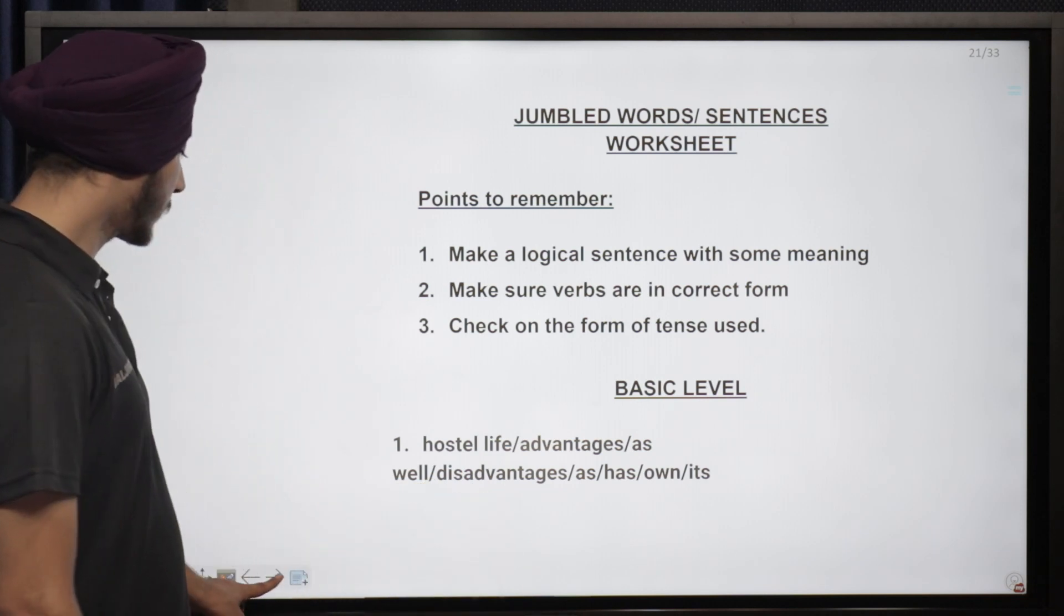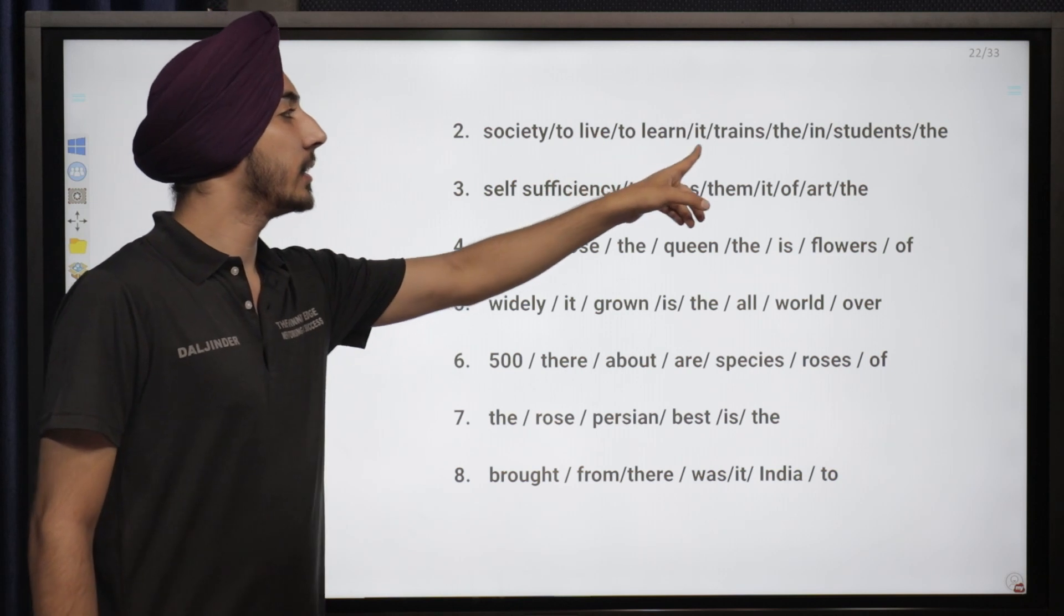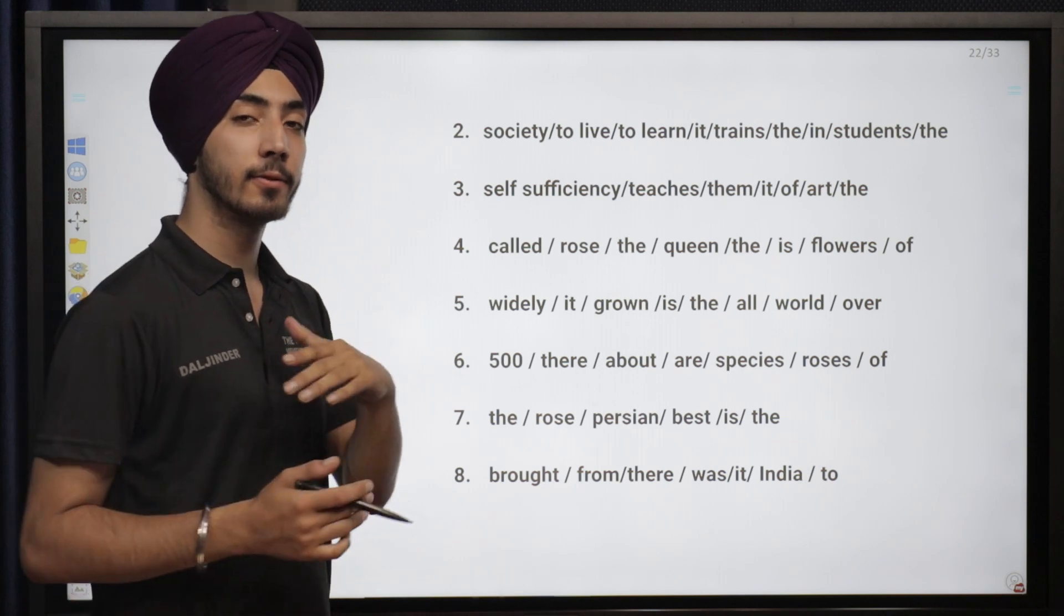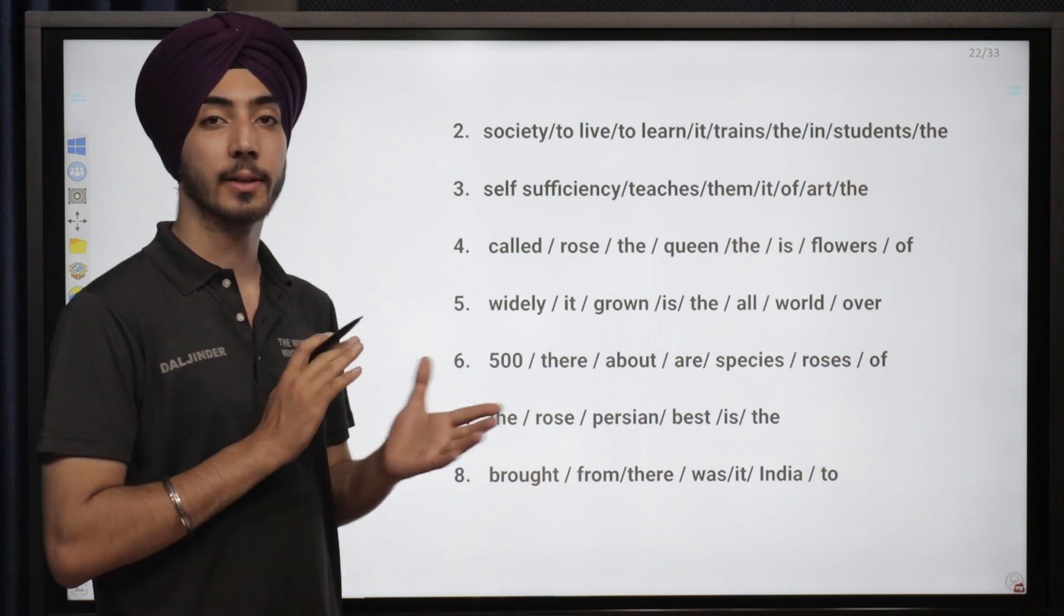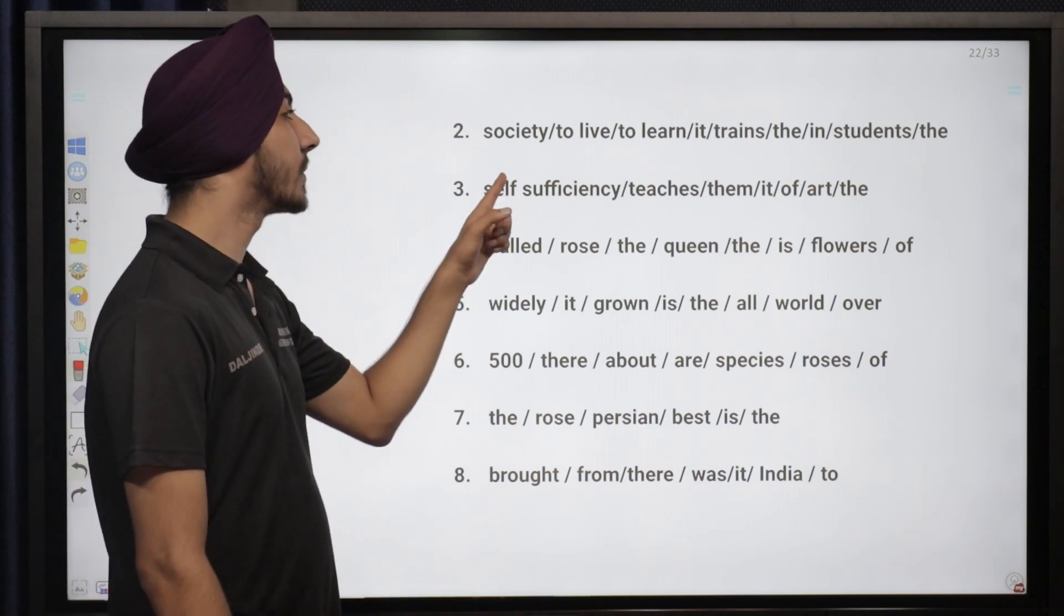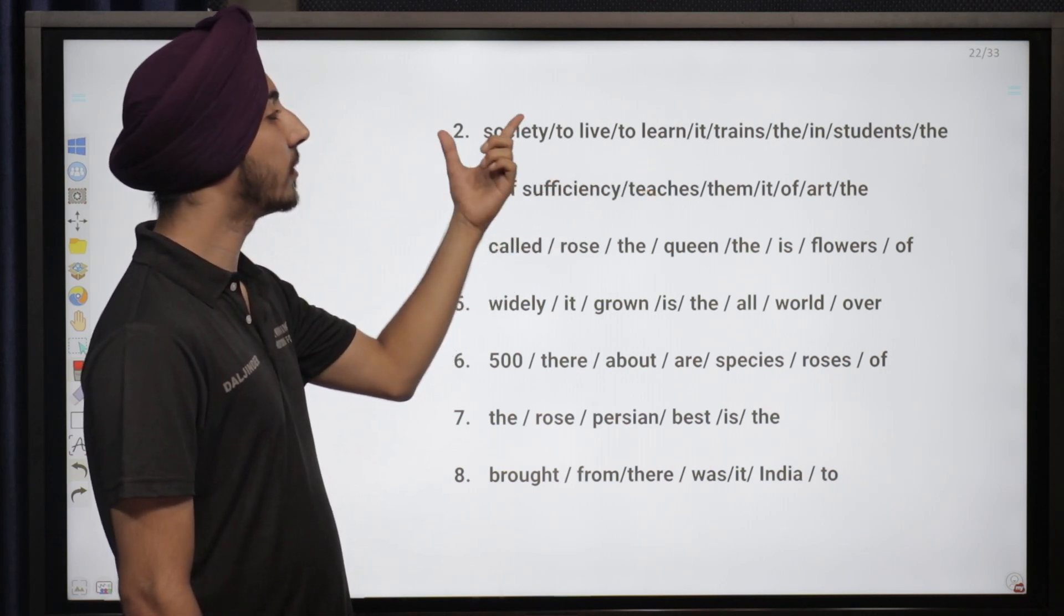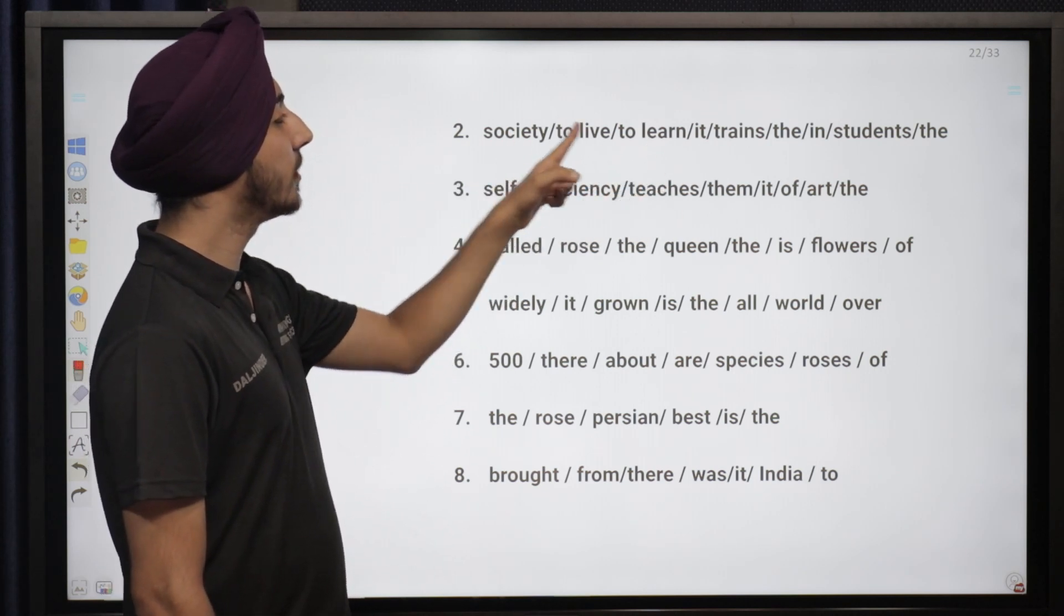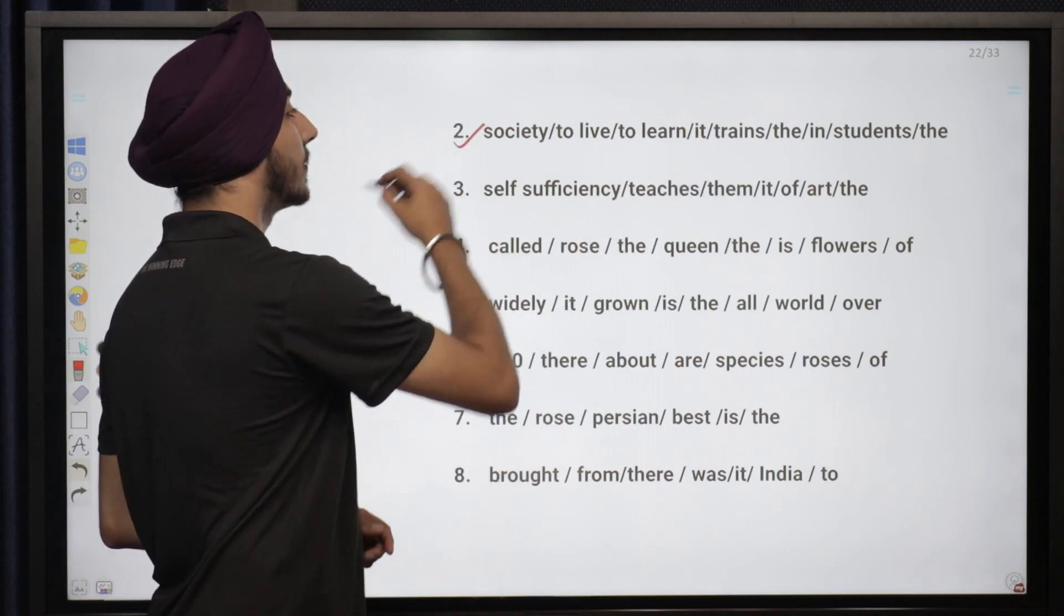Let's move on to the next set of sentences: society to live to learn it trains the in students the. While watching the video you should have this tendency that before I solve it, in your mind you should quickly solve it. It will make your work interesting. So what can be the form of this? The society trains the students to learn to live in it.